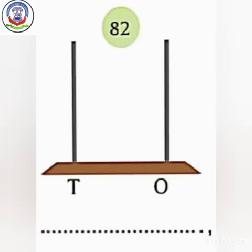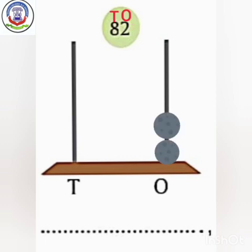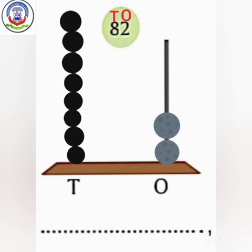Next is 82. We will write 10s and 1s first. Here we will write 1s and here we will write 10s. How many 1s do we have? We have 2 ones, so we will make 2 beads at the 1s place. How many 10s do we have? We have 8 tens, so we will make 8 beads at the 10s place. The number name is 82.